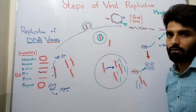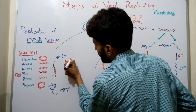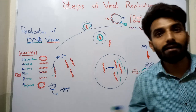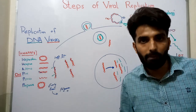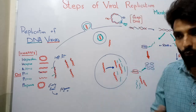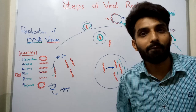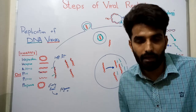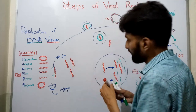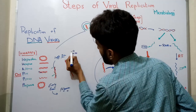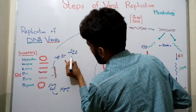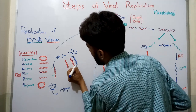Now, moving to the late genes — when these late genes get transcribed and translated, proteins will be formed. Those proteins will not be functional proteins; they will be structural proteins — the proteins involved in the formation of the capsid and the envelope if it is an enveloped virus. So by the expression of late genes, structural proteins will be formed.